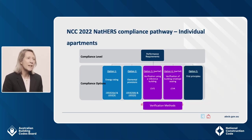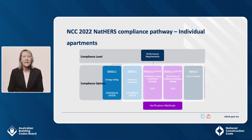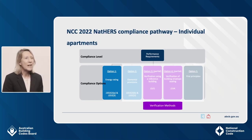This flowchart shows how the NatHERS compliance pathway for individual apartments fits into NCC Volume 1 and the relationship it has with the performance requirements. The NatHERS pathway in NCC Volume 1 is an existing compliance option and, practically speaking, the way it operates is broadly the same as under NCC 2019, with some minor changes consistent with the NatHERS pathway in NCC Volume 2. The stringency has increased to reflect the increase in house energy efficiency for NCC 2022. NatHERS also now incorporates a whole-of-home rating tool that you can use when showing compliance with the energy usage performance requirement J1 P3. NatHERS whole-of-home provides a score out of 100 for an individual sole occupancy unit, with the NCC requiring that each apartment achieve a score of no less than 50.